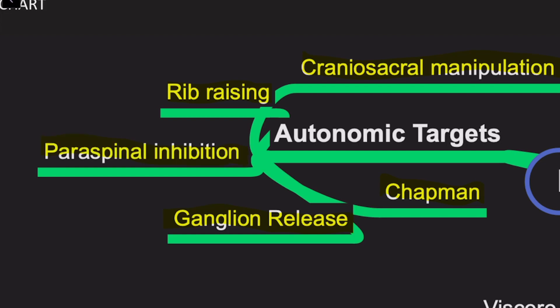For example, rib raising can be used to normalize sympathetic activity. For patients with an ileus post-surgery who are overly sympathetic, you can use this to improve the amount of time the patient has an ileus — there's actually a lot of studies on that. Soft tissue paraspinal techniques can also normalize sympathetic activity and can be used for a wide variety of reasons. To target the parasympathetic system, you can use cranial manipulation, condylar decompression, or sacral techniques.